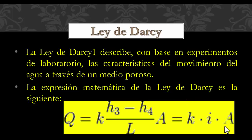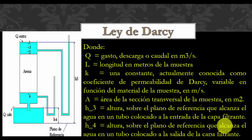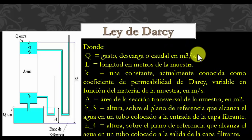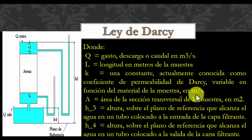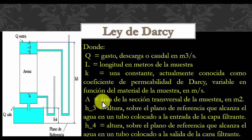En esta fórmula, Q es el gasto o caudal de descarga, medido en metros cúbicos por segundo. L es la longitud en metros de la muestra tomada. K es el coeficiente de permeabilidad de Darcy, medido en metros por segundo, variable en función de longitud y tiempo. A es el área de la sección transversal de la muestra, medida en metros cuadrados.